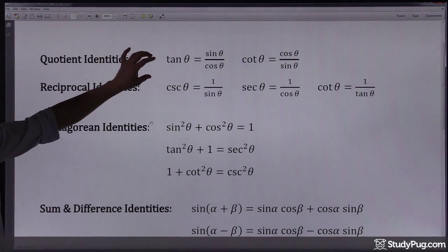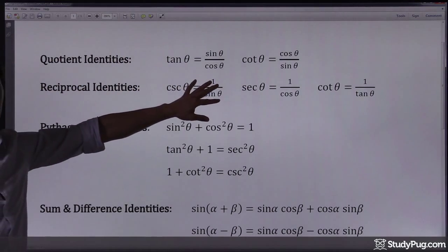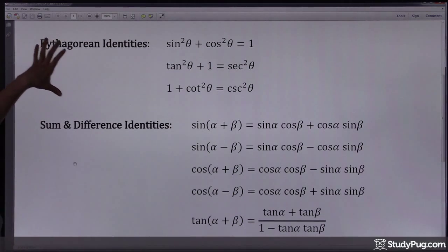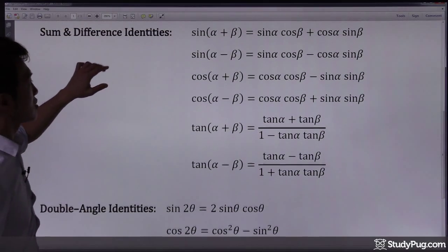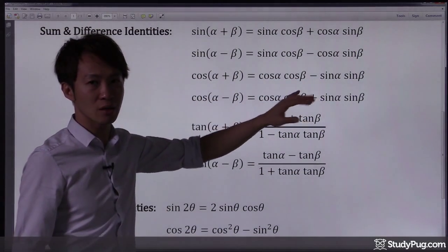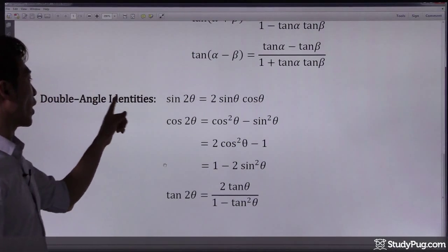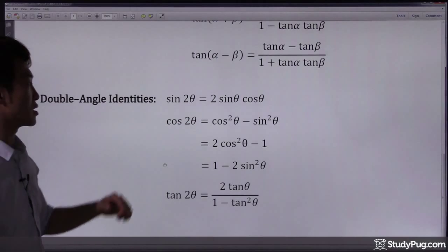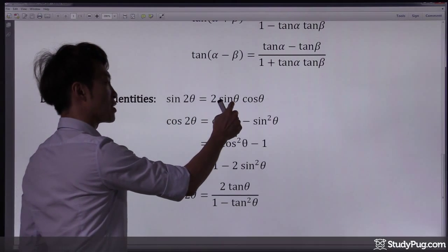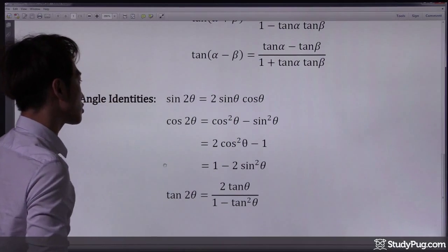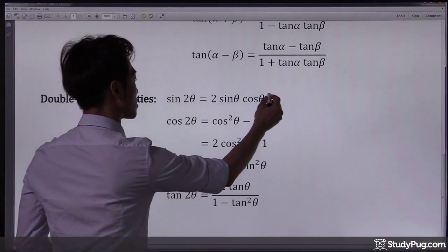Not in quotient identities, not in reciprocal identities, not in Pythagorean identities, not in sum and difference identities, right? So you only see that in double angle identity for sine. A number followed by sine and cosine. So we know we want to use this formula for this particular question.